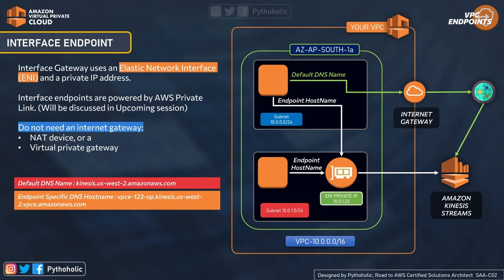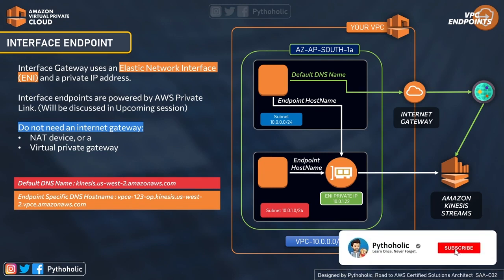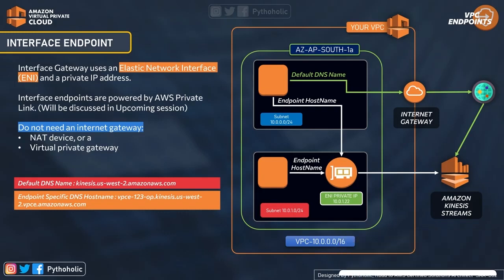VPC endpoint services use network load balancers — we'll cover that with AWS PrivateLink. With interface endpoints, you can talk to AWS services without needing NAT gateways, NAT devices, or virtual private gateways. Once the interface endpoint is created, your instance can access Kinesis Data Streams privately using the endpoint-specific DNS hostname: vpc-123.kinesis.us-west-2.vpce.amazonaws.com, which uses the private IP from your VPC subnet. To use private DNS, it must be enabled.